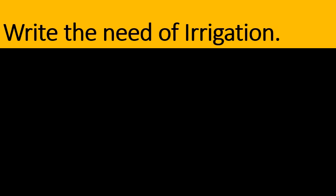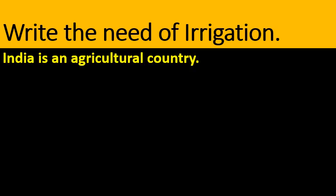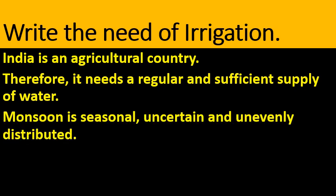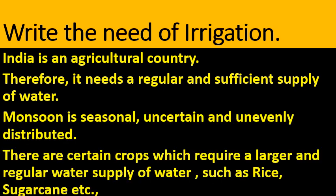Write the need for irrigation. India is an agricultural country and therefore needs a regular and sufficient supply of water. Monsoon is seasonal, uncertain and unevenly distributed. Certain crops like rice, paddy and sugarcane require large amounts of water. Therefore, we need irrigation.